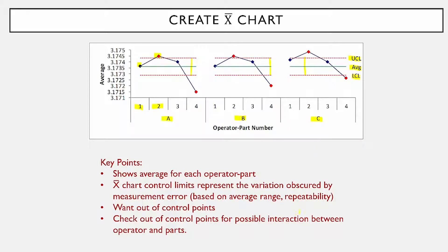It is the part obscured by measurement error. In this case, you want out-of-control points because that average range is based on repeatability. What you want to do is not worry about the points within the control limits, but look at the points beyond the control limits to see if they're similar for each operator. You can see these three points are pretty similar for each operator. But down here, there are three that are below the lower control limits for part four, and you begin to wonder whether there are some differences there.